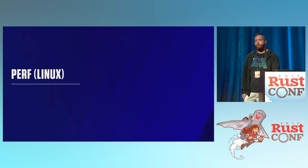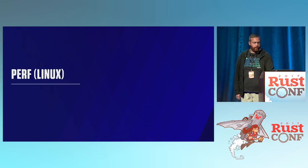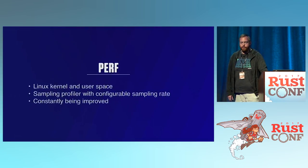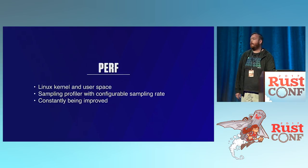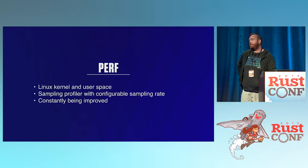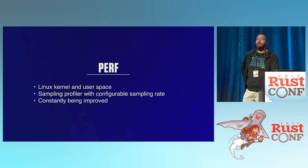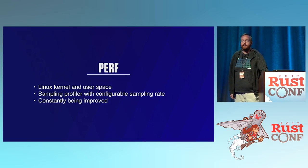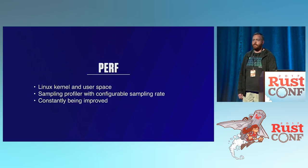On Linux, at Buoyant we deploy most of our code on Linux, so we dig in with Perf. Perf has been part of Linux for a few years and they've been constantly improving it. It has both kernel and user-space profiling, it's a sampling profiler with a configurable sampling rate. The Nyquist theorem tells you that if you want to see something happening at rate X, you should sample it at 2X. It's also designed to run at low overhead, so you can run it in production at a moderate sampling rate.